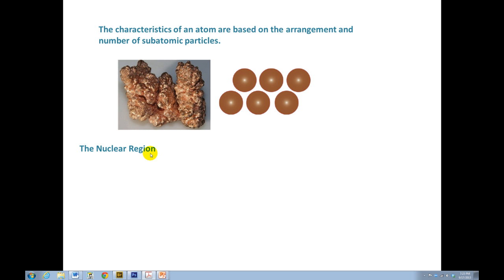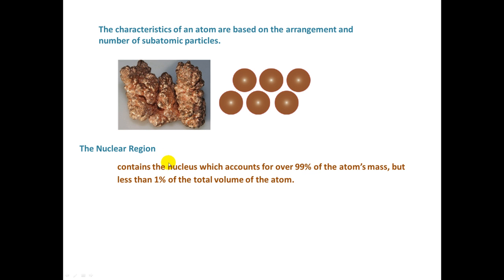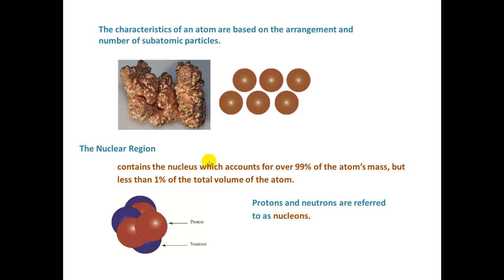Now let's talk about the nuclear region. The nucleus accounts for over 99% of the atom's mass, but less than 1% of the total volume of the atom. Protons and neutrons are referred to as nucleons. The nucleus of an atom always has a positive charge because it is composed of protons and neutrons. Neutrons have neutral charge — zero charge — whereas protons are positively charged. So it makes sense that the nucleus of the atom has a positive charge.